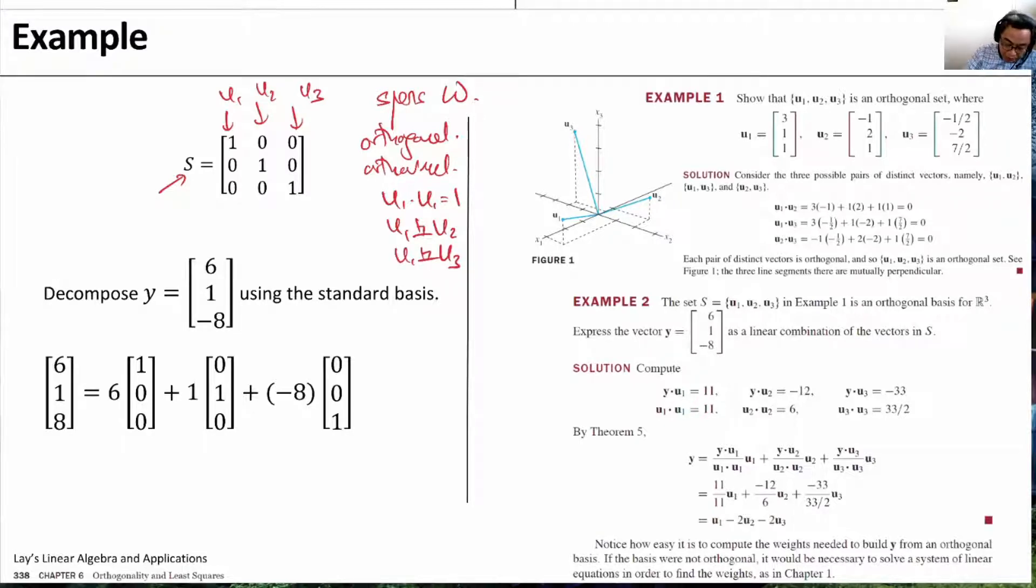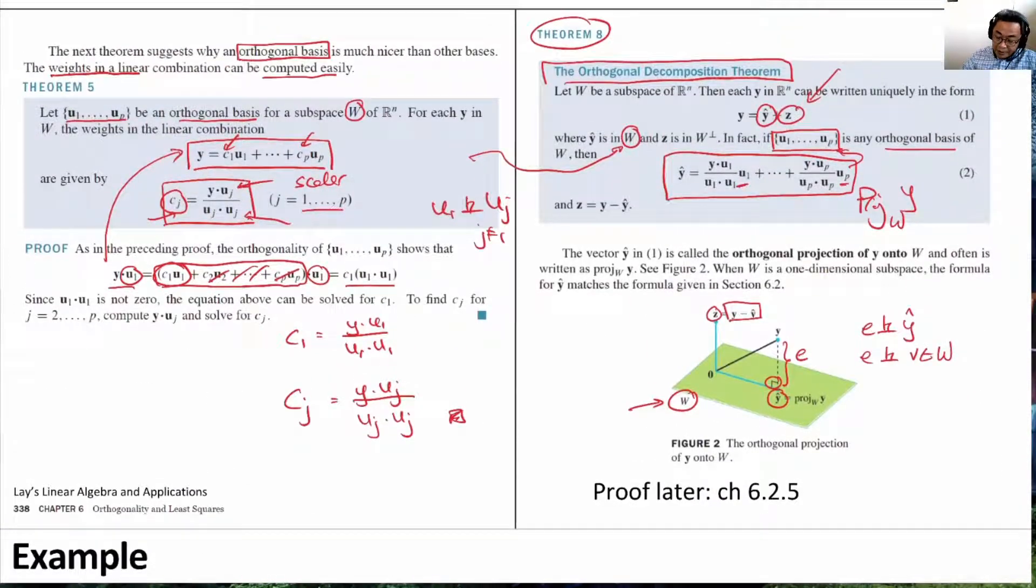Let us now project Y onto the space of W, and let us decompose Y into the orthogonal basis U1, U2, U3. What are the weights? This is U1, this is U2, and this is U3. These are the weights C1, C2, and C3. How is C1, C2, C3 formed? It is by this equation over here on the left.